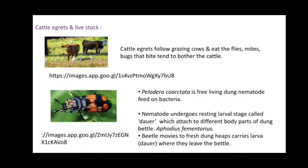Cattle egrets follow grazing cows — the birds eat flies, mice, and bugs that bite and tend to bother the cattle. Another example involves the dung beetle.